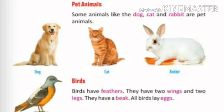So we have learnt about wild, domestic, and pet animals. Animals found in the jungle are called wild animals. Animals that we see around us — like cow, buffalo, goat, sheep — are called domestic animals. And animals we keep in our homes are called pet animals.